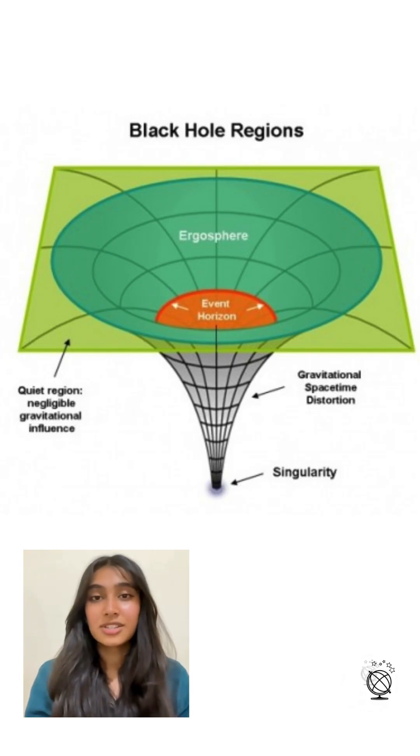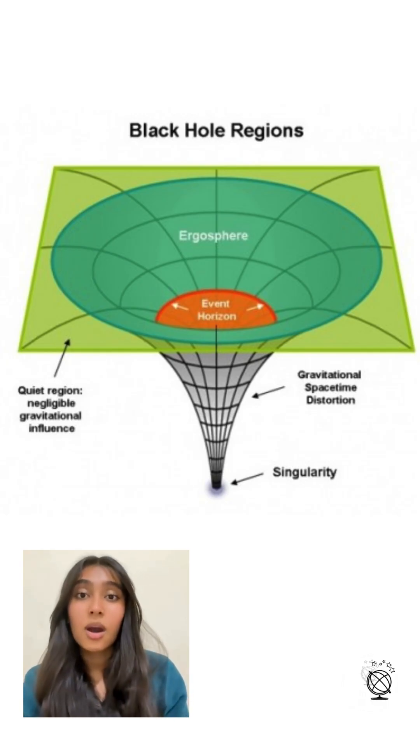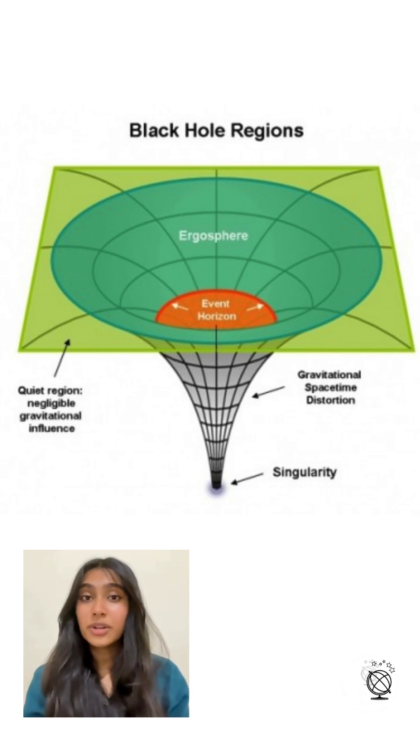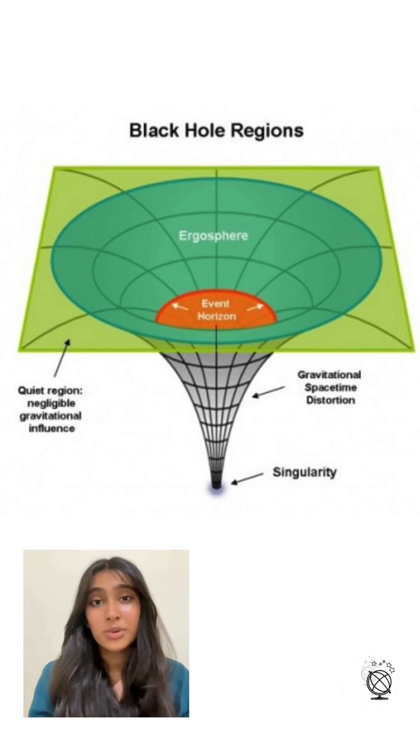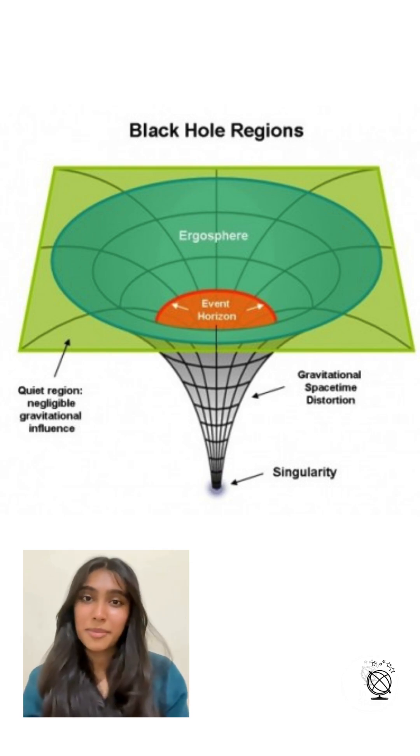Whatever is left is known as a singularity, a point with infinite density, surrounded by the event horizon, which is the invisible boundary where escape becomes impossible.